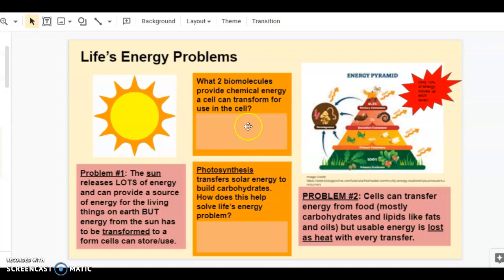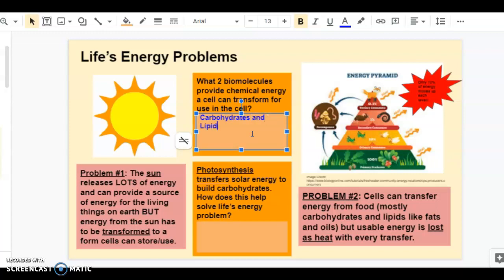So let's think about this. What two biomolecules provide chemical energy? It's a review from something we've talked about before. They are the carbohydrates and the lipids. Remember that group of four families of chemicals called biomolecules. Those are the two that give off energy.